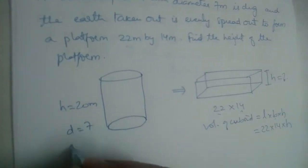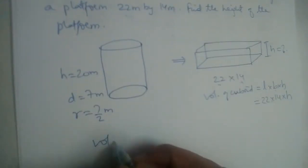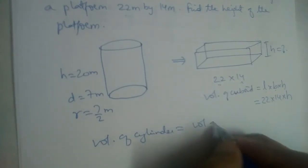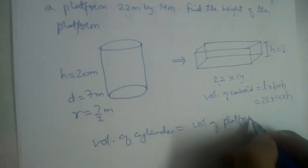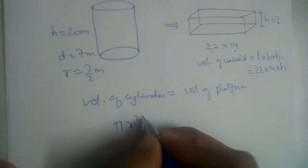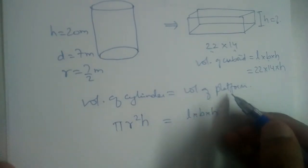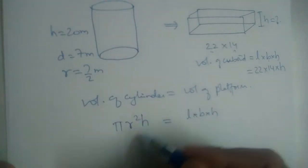Volume of this cylinder or well will be equal to volume of the platform. Volume of the cylinder is pi r squared h and this is l into b into h for the platform. Don't cancel this h and that h because the heights are different.